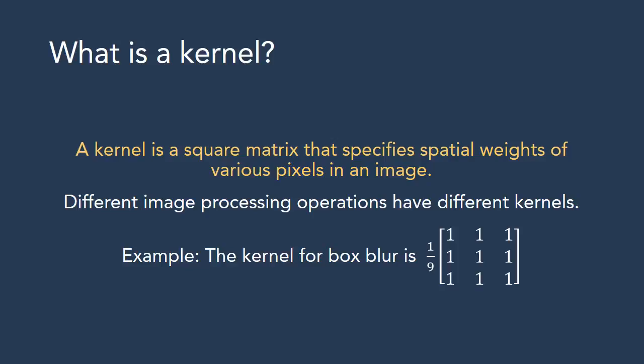The next definition is for the not-so-well-known term kernel. In image processing terms, a kernel is a square matrix of spatial weights assigned to the neighborhood of a pixel when an image is being processed. Every image processing operation is identified by a characteristic kernel. For example, the kernel for box blur is 1/9 times a 3×3 matrix of ones. We will see exactly how a kernel is applied on an image in the coming slides.